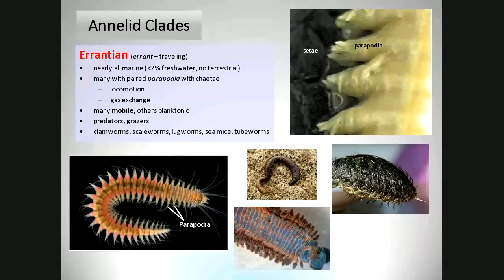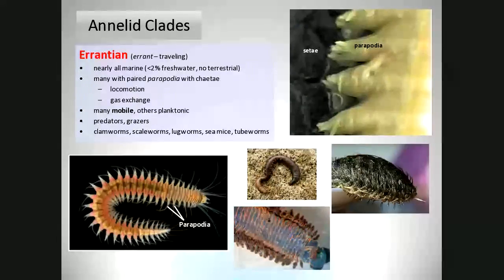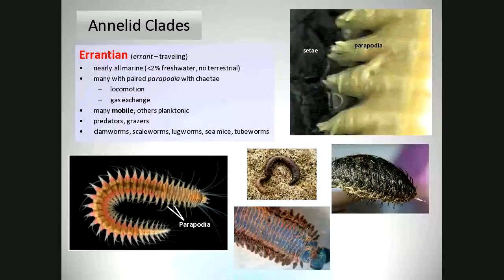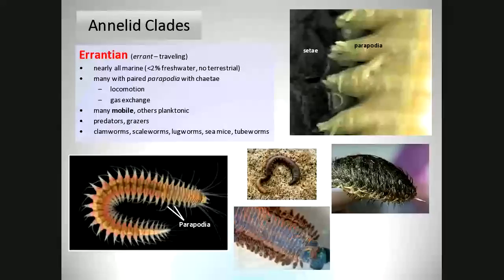It's easy to remember which group is which because the Errantian worms aren't smooth like an earthworm — they have appendages hanging off called parapodia. Looking at the picture in the upper right, those parapodia are little projections. A lot of these species are marine; some are in fresh water, none are terrestrial. The parapodia are great for locomotion, but they're also thin, so they're good for gas exchange — diffusion of gases across the membrane. Things in biology often have more than one function.